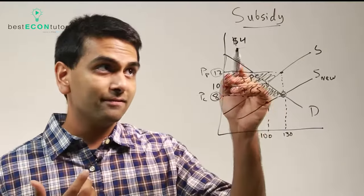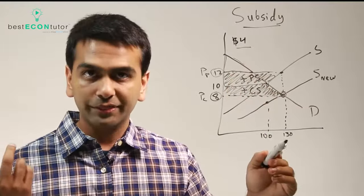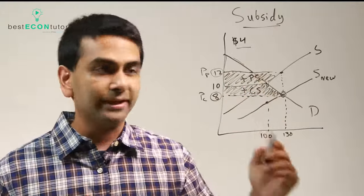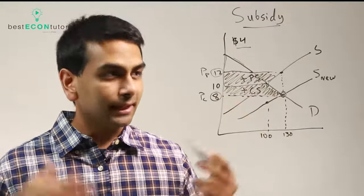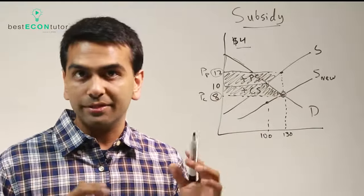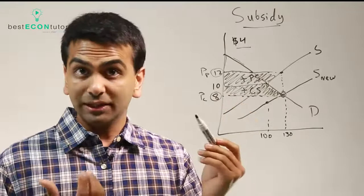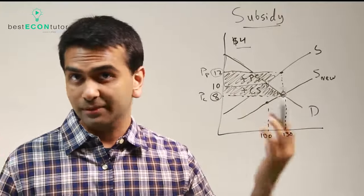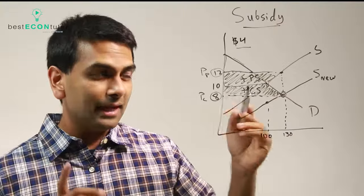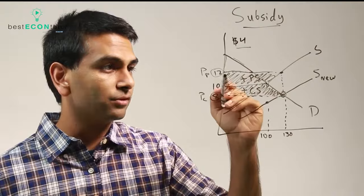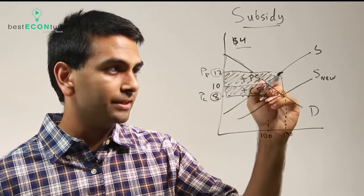Because the government does have to pay four dollars a unit for 130 units. So we have to subtract four times 130, because that's how much the government spends. You might also be wondering—once we subtract that four times 130, what if that's less than how much these both are combined going up by? Do we have a higher total surplus afterwards? Well, not really, because the amount that the government pays, four times 130, will be this much.